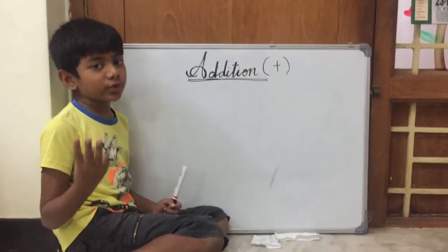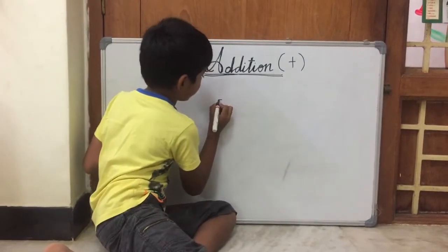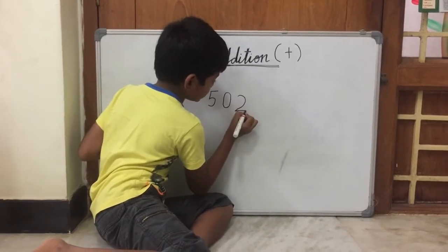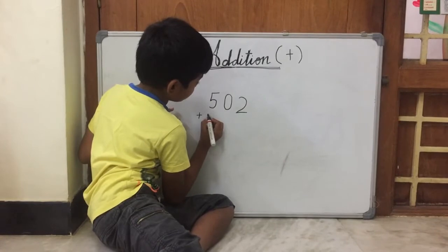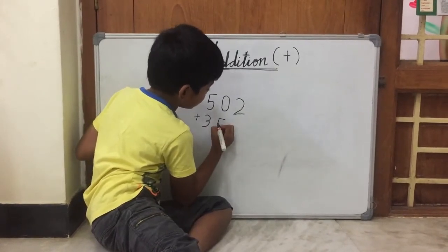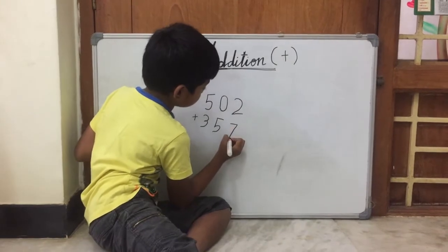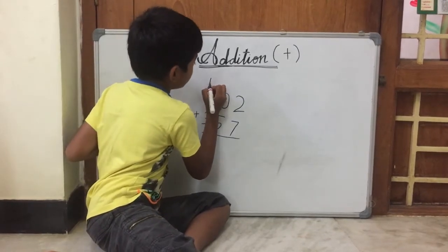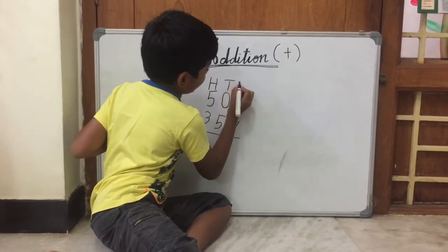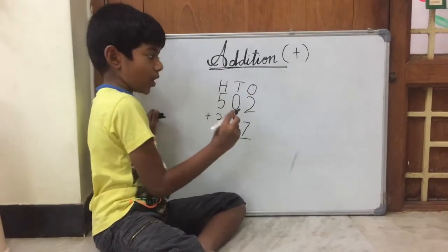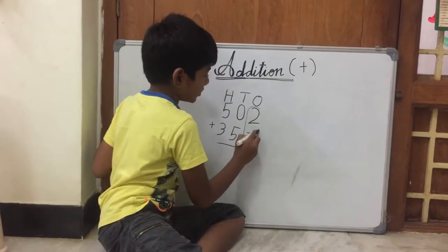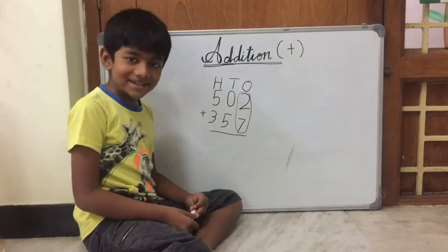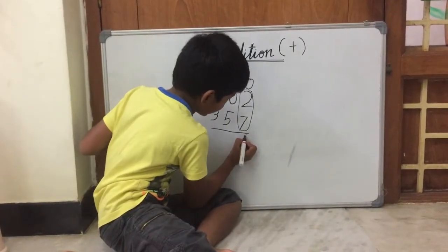Now let's move on to the 3-digit addition. 502 plus 507. Now let's add. This is the 100's, the 10's, and the 1's. First we need to add the 1's: 2 plus 7. So what is 2 plus 7, guys? Yes! It is 9. So we should write 9 right here.